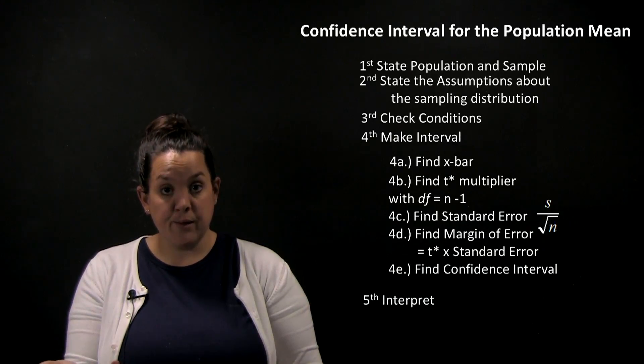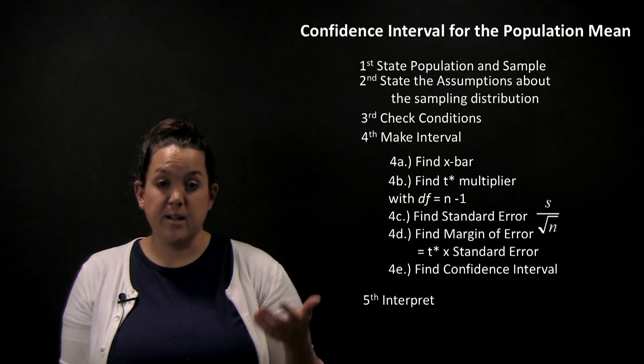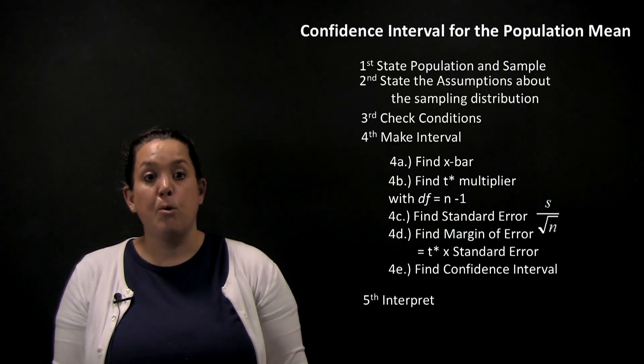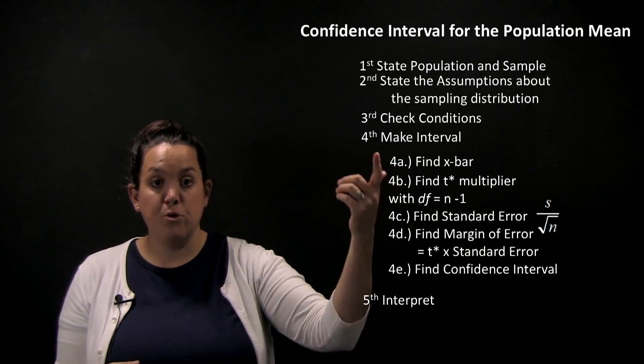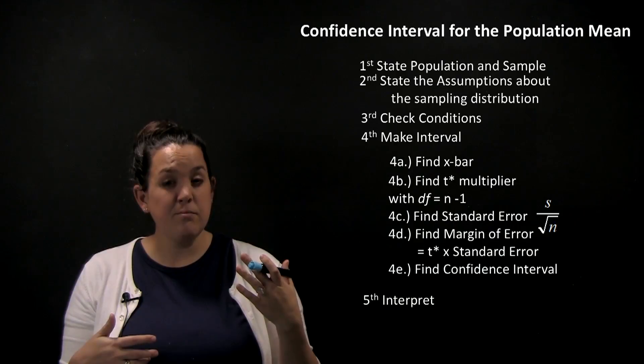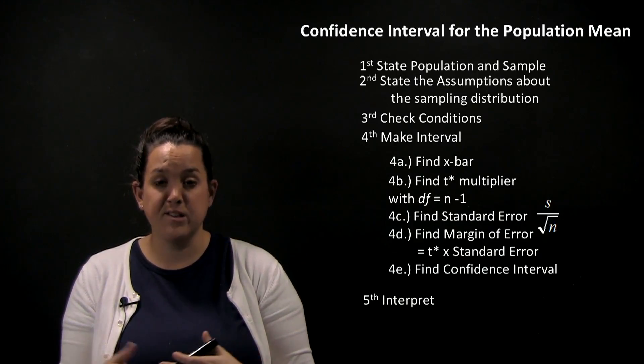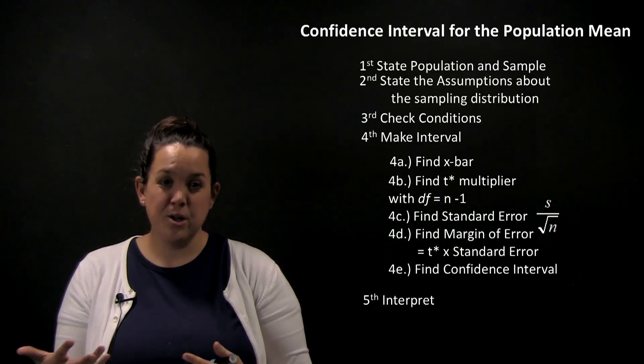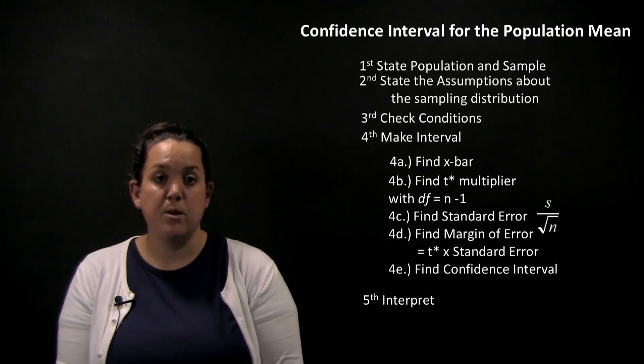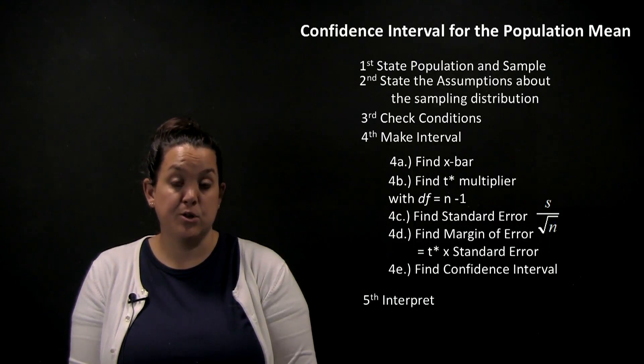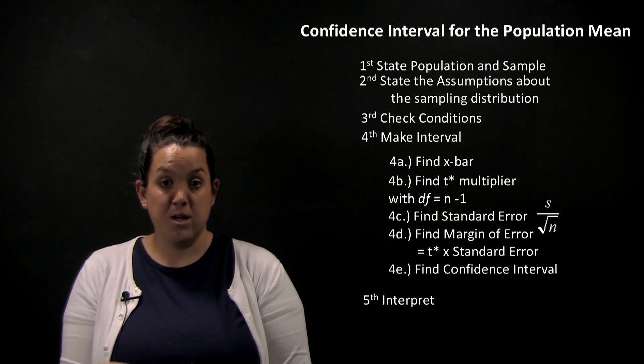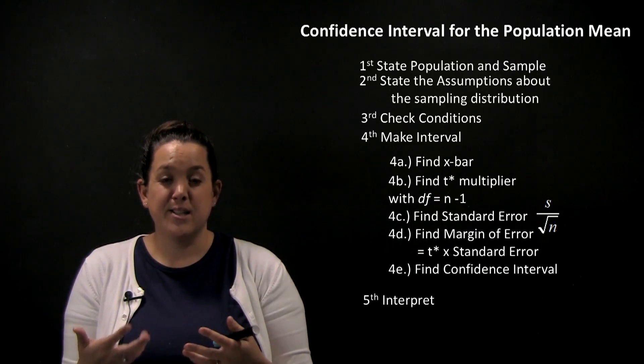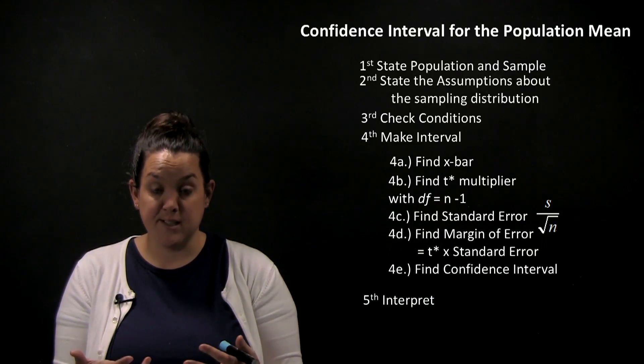The third thing that we have to do is essentially verify that assumption—that the sampling distribution of x-bar is normal. We do that through what's called checking conditions. This is a more complicated process than what we saw in chapter 2. It would be wonderful if we could assume that the original population is normal, but because we're making an inference, we don't have information on the population, and so it's hard for us to make that assumption.